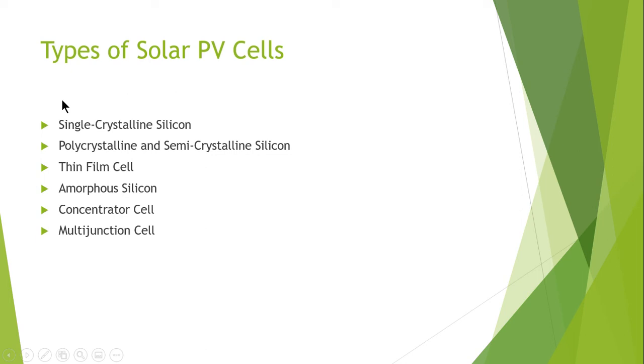These are basically the six main types of photovoltaic cells or solar cells. The first one is single crystalline silicon, the second one is polycrystalline and semi-crystalline silicon.